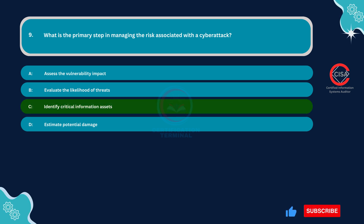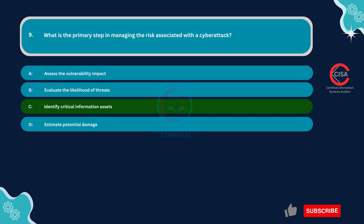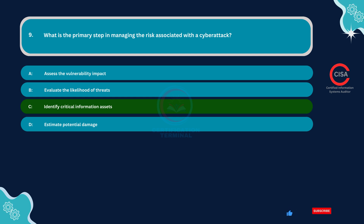Identifying critical information assets is the primary step in managing the risk associated with a cyber attack. Critical assets are those that are essential for the operation of the organization and are likely to be targeted by attackers. Once these assets are identified, appropriate security measures can be implemented to protect them from cyber threats.